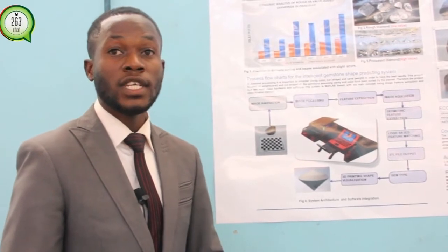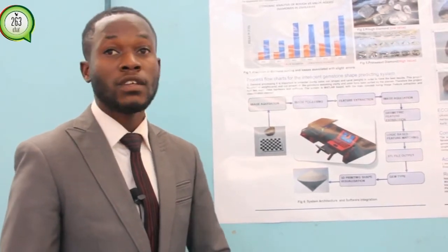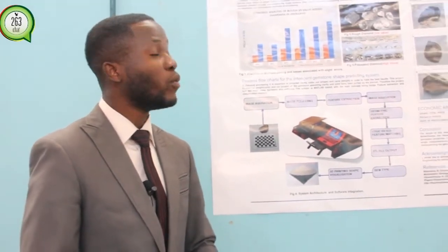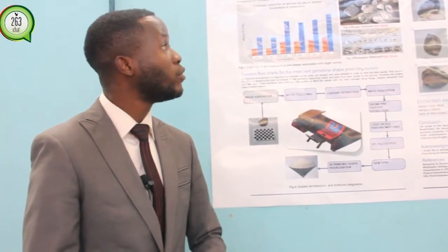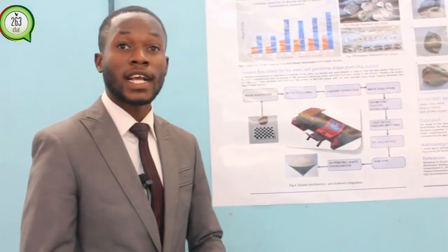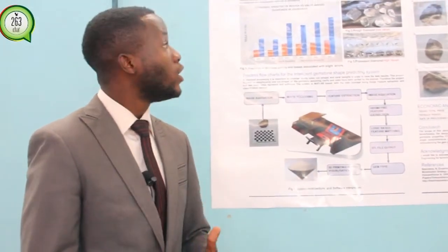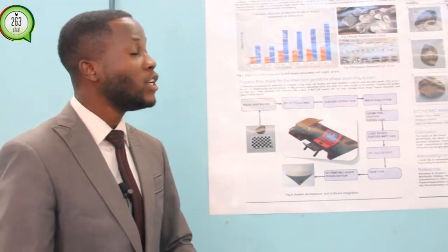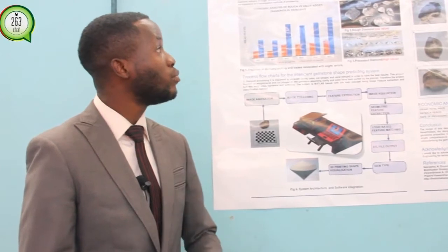Also important is the weight, which determines the current value. Within my system we also have two other important factors: clarity and color. So within my system I managed to address the weight and the cut — which is the shape — as the most important things in diamond processing.